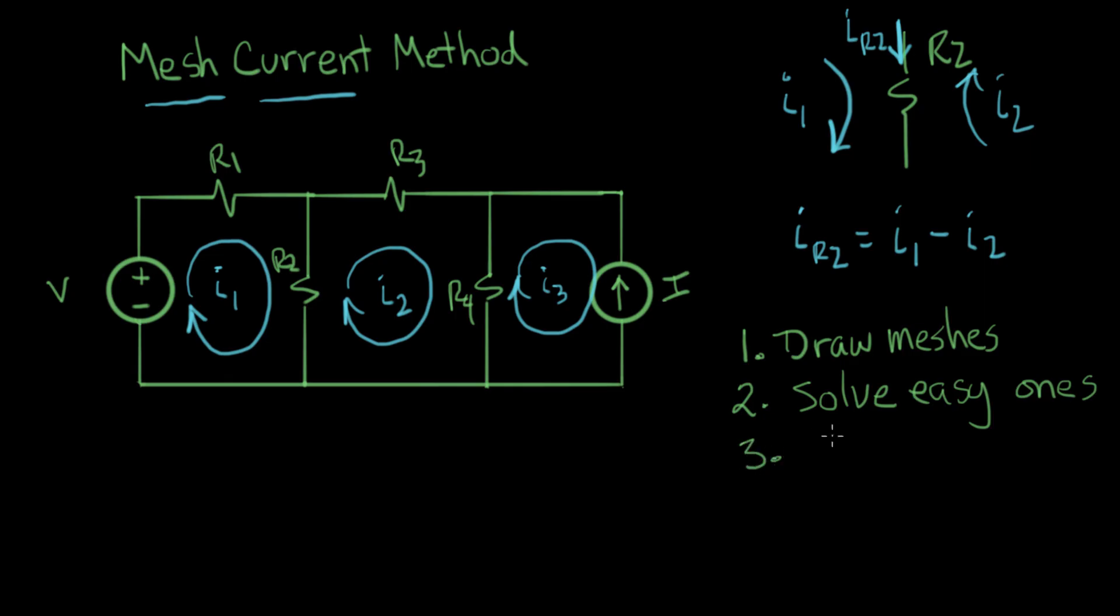Then the third step in the method is to write Kirchhoff's voltage law, KVL, equations for the two remaining mesh currents. And the fourth step is solve. In this video we're going to do the first three steps, and then in the next video we'll do the full solve.